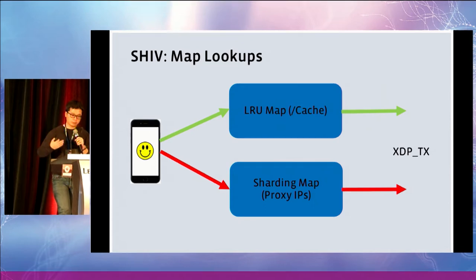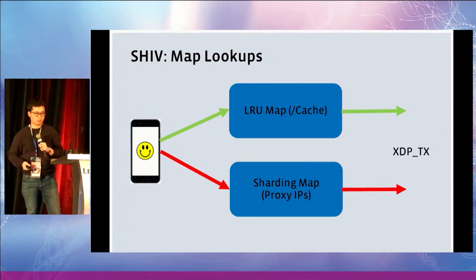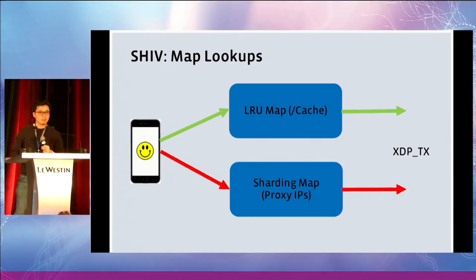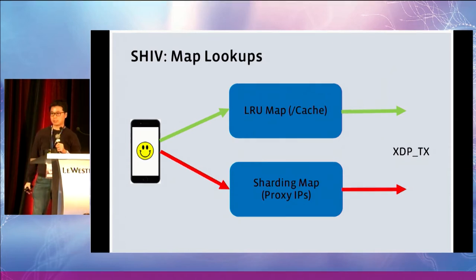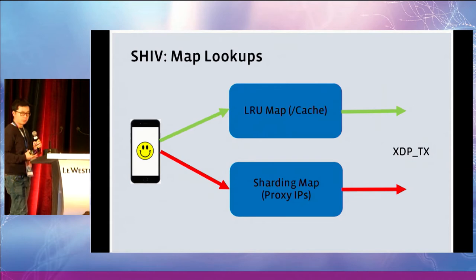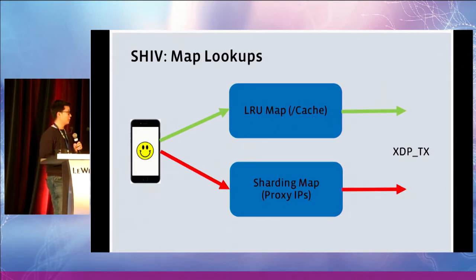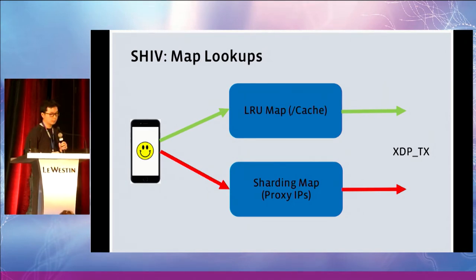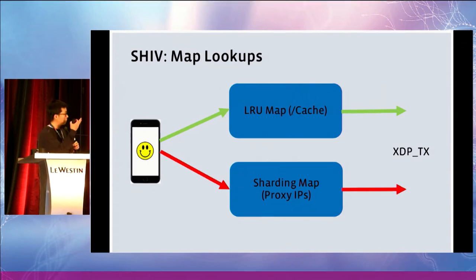Now I'll dive into some details of what the XDP program does to realize the L4 load balancing functionality. It's amazingly simple — I can cover it in two slides. Almost any BPF program uses some maps. In our L4 load balancing case, we only have two maps. The first is a sharding or consistent hashing map. The user space program generates this map based on the proxy IPs it needs to load balance traffic to, using a consistent hashing algorithm or any reasonable sharding algorithm. The second map is an LRU map, which we use as a cache.